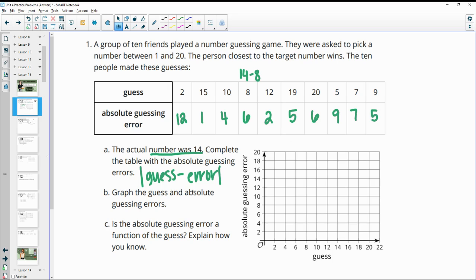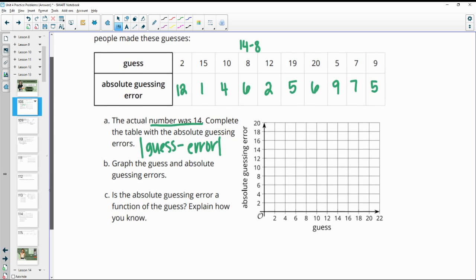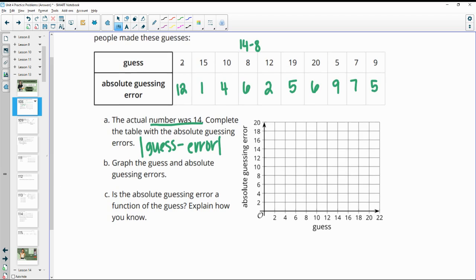Then it wants us to graph the guess and the absolute guessing error. So we're just going to think of these as ordered pairs. 2 is going to graph to 12, 15 will be at 1, and so on.